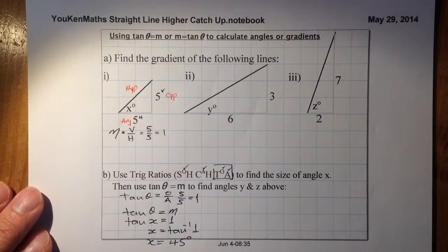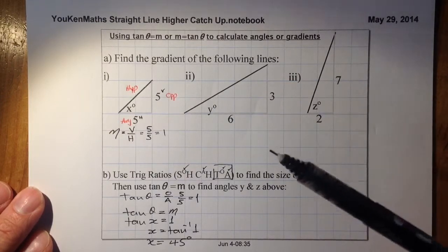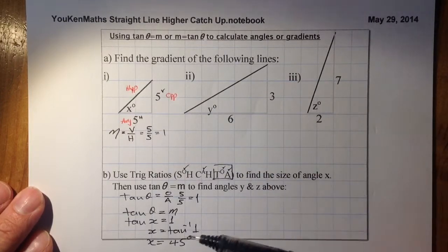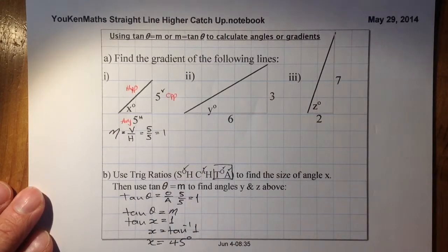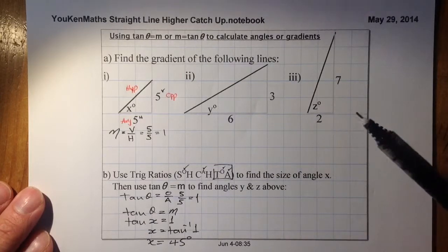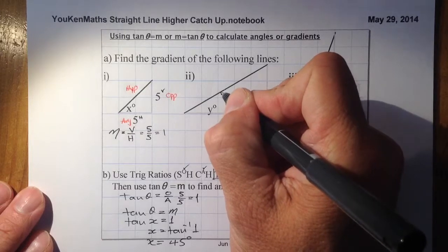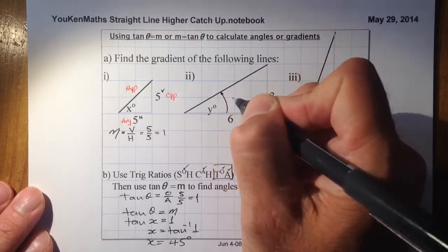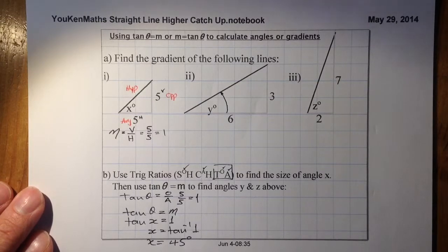What you can do now is try questions 2 and 3, using the tan θ equals m formula to work out the angle in each case. Remember, it's the angle anticlockwise from the horizontal. Freeze the video and I'll give you the answers in a second.